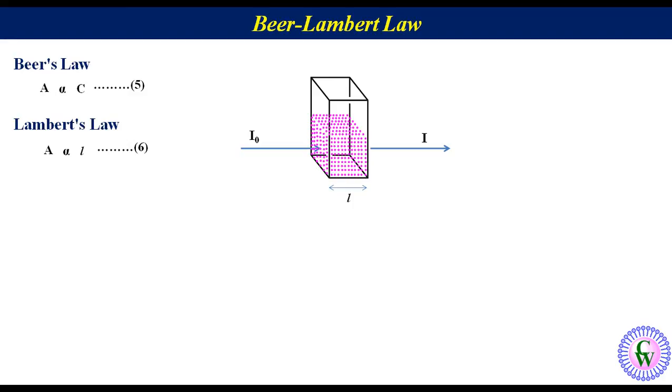Combining relation 5 and 6 will give Beer-Lambert law. This combination will be A is proportional to C into L. Relation number 7.